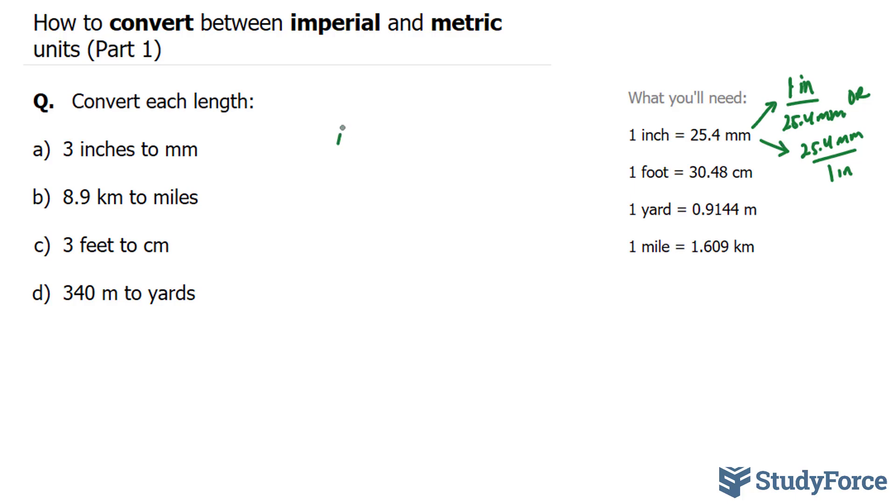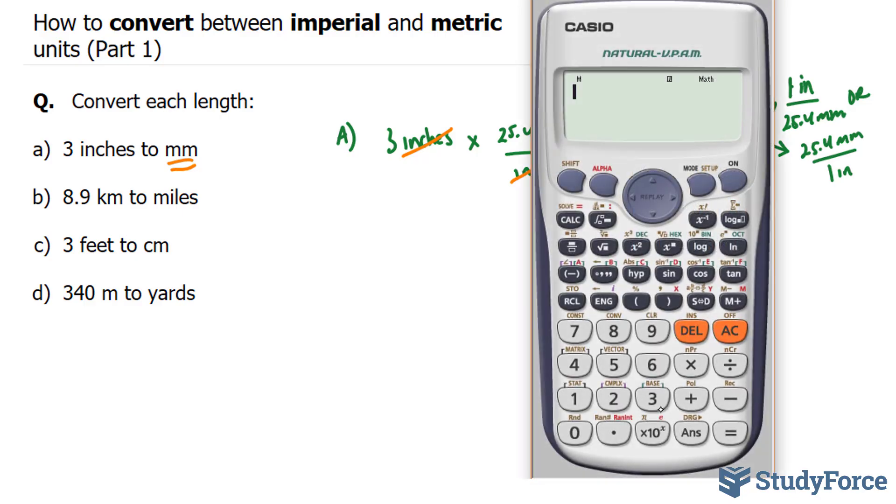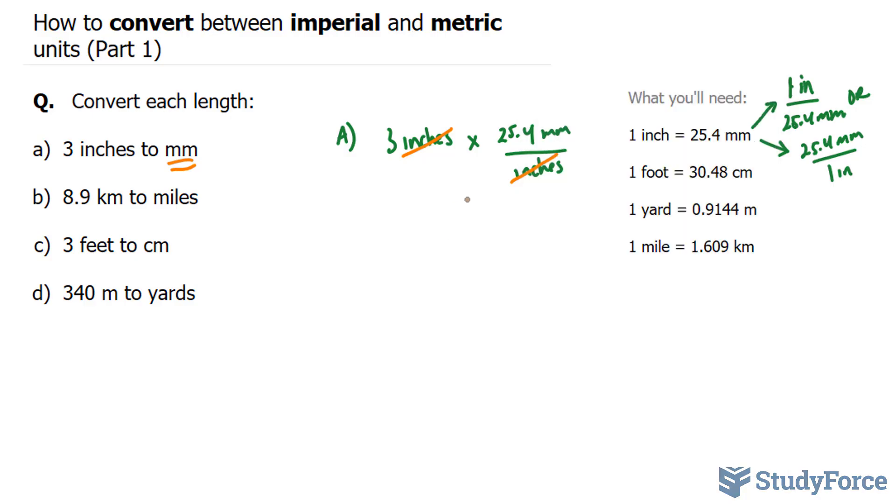Here we want to go from 3 inches. We have to decide which of these two fractions we are going to use to multiply to this 3. The fraction we will choose for this particular case is this one below. If I multiply 3 inches by 25.4 millimeters at the top and inches at the bottom, this inch at the top will cancel out with this inch at the bottom. So you're left with 3 times 25.4 millimeters, and that's exactly what we're looking to get. 3 times 25.4 will give us 76.2 millimeters. And that is the answer for A.